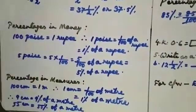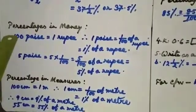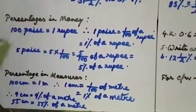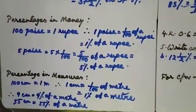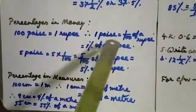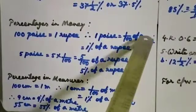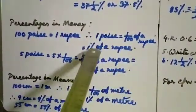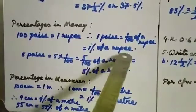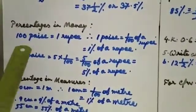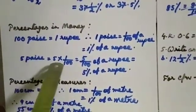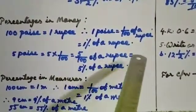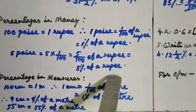Now, percentages in money. All of you know that 100 paisa is equal to 1 rupee, so 1 paisa is equal to 1 by 100 of a rupee — that is 1 percent of a rupee. Similarly, 5 paisa is equal to 5 into 1 by 100, that means 5 by 100 of a rupee, or 5 percent of a rupee.